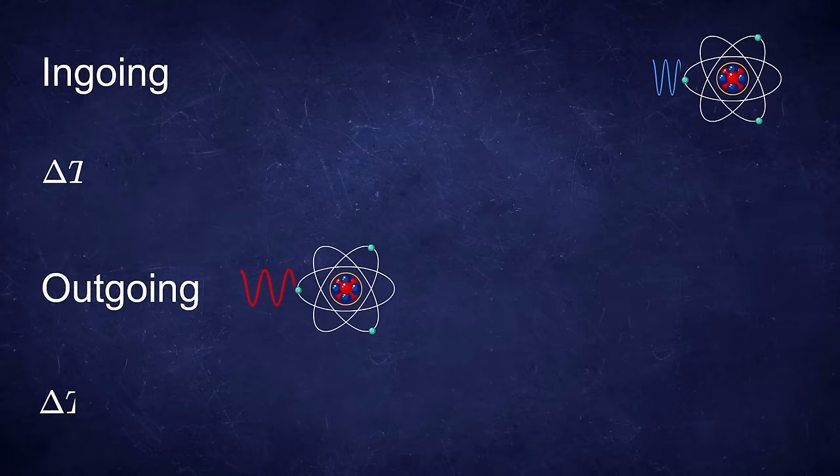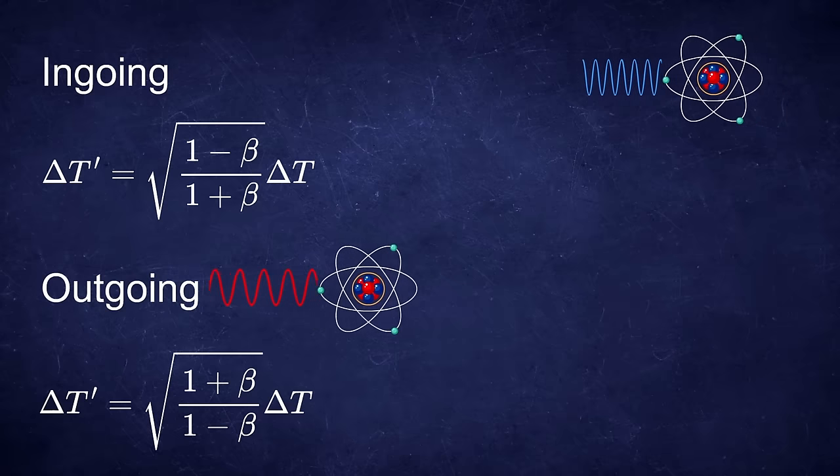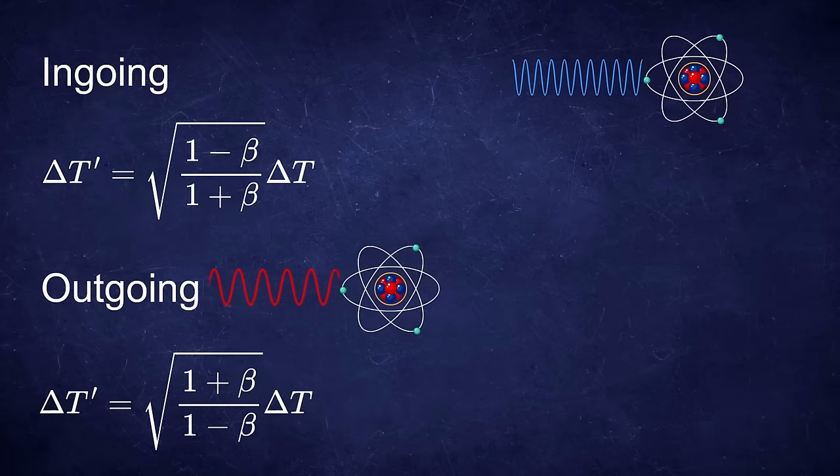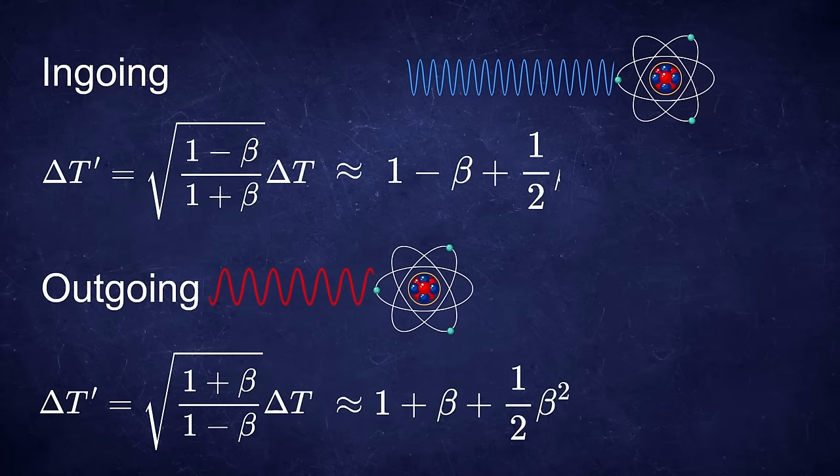But what is the reason for this transverse part if the source wasn't moving in the transverse direction at all? You can analyze the equation for a source moving towards and away from you separately and you can use Taylor expansion.